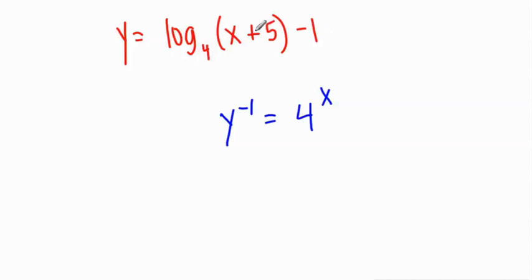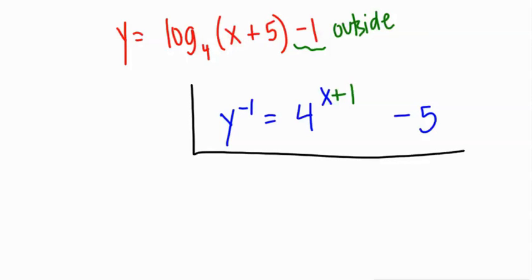Well, what am I doing here? I'm adding 5 inside the function. So that means I'm going to subtract 5 outside the inverse function. I'm subtracting 1 outside. Therefore, I'm going to add 1 inside the inverse function. And it's as easy as pi. I don't know how easy pi is, but it's pretty easy if you think about inside and outside.